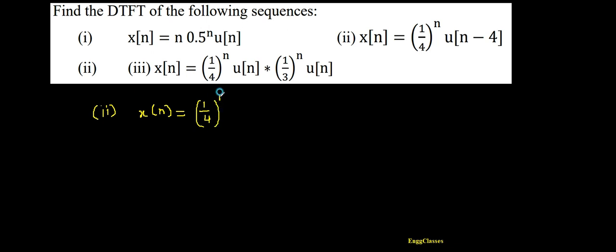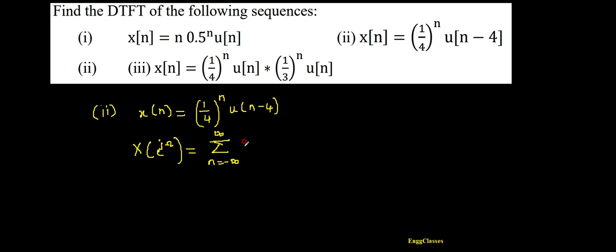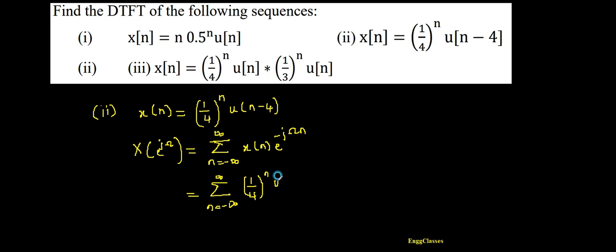So how do I find the DTFT of this? For this, I should know the formula of DTFT: X(e^{jω}) = summation from n = -∞ to ∞ of x(n) * e^{-jωn}. Once we know the formula, I can find the DTFT of the given sequence: summation from n = -∞ to ∞ of (1/4)^n * u(n-4) * e^{-jωn}.